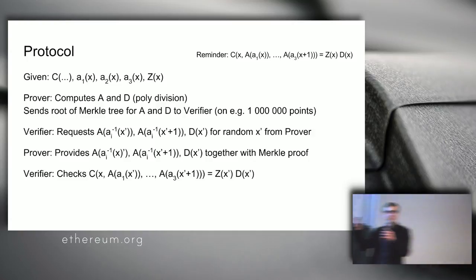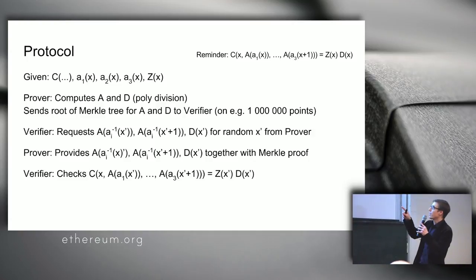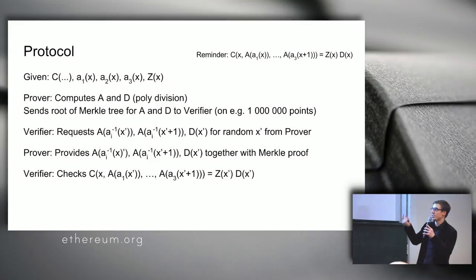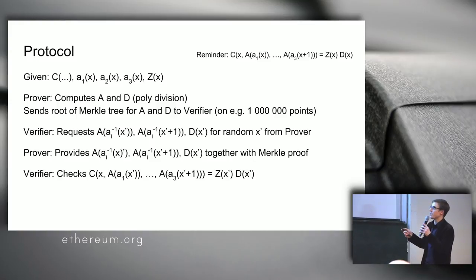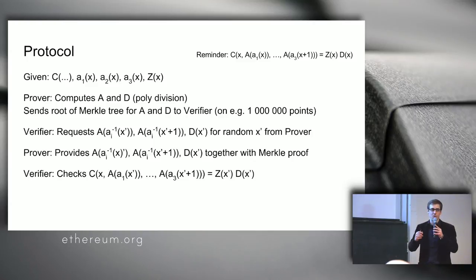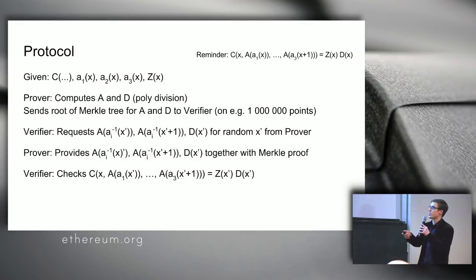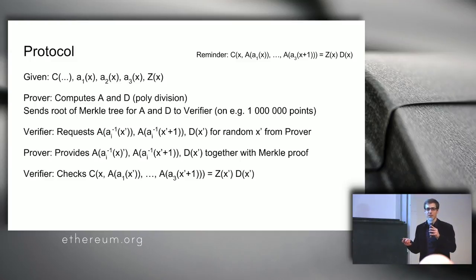Now we have this random number, and then the prover can just use that random number, provide the required values, and the verifier performs the check. This proof is then complete — we send it to the blockchain, and the blockchain just reruns the steps of the verifier. That's how we remove both interaction and randomness.